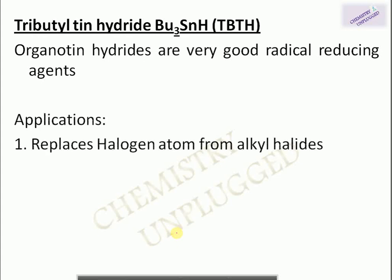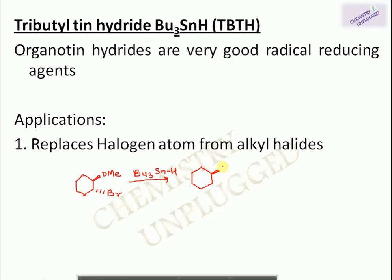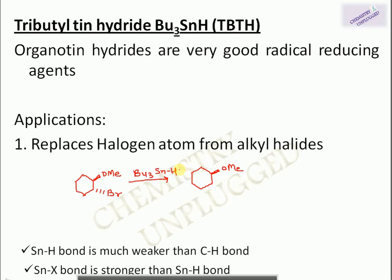The first synthetic application is that TBTH replaces halogen atoms from alkyl halides. For example, we have a molecule with a methoxy group and a bromine atom. Using Bu₃SnH, the Bu₃Sn–H bond breaks, the tributyltin radical abstracts the bromine, and a hydrogen radical attaches in its place — replacing bromine.